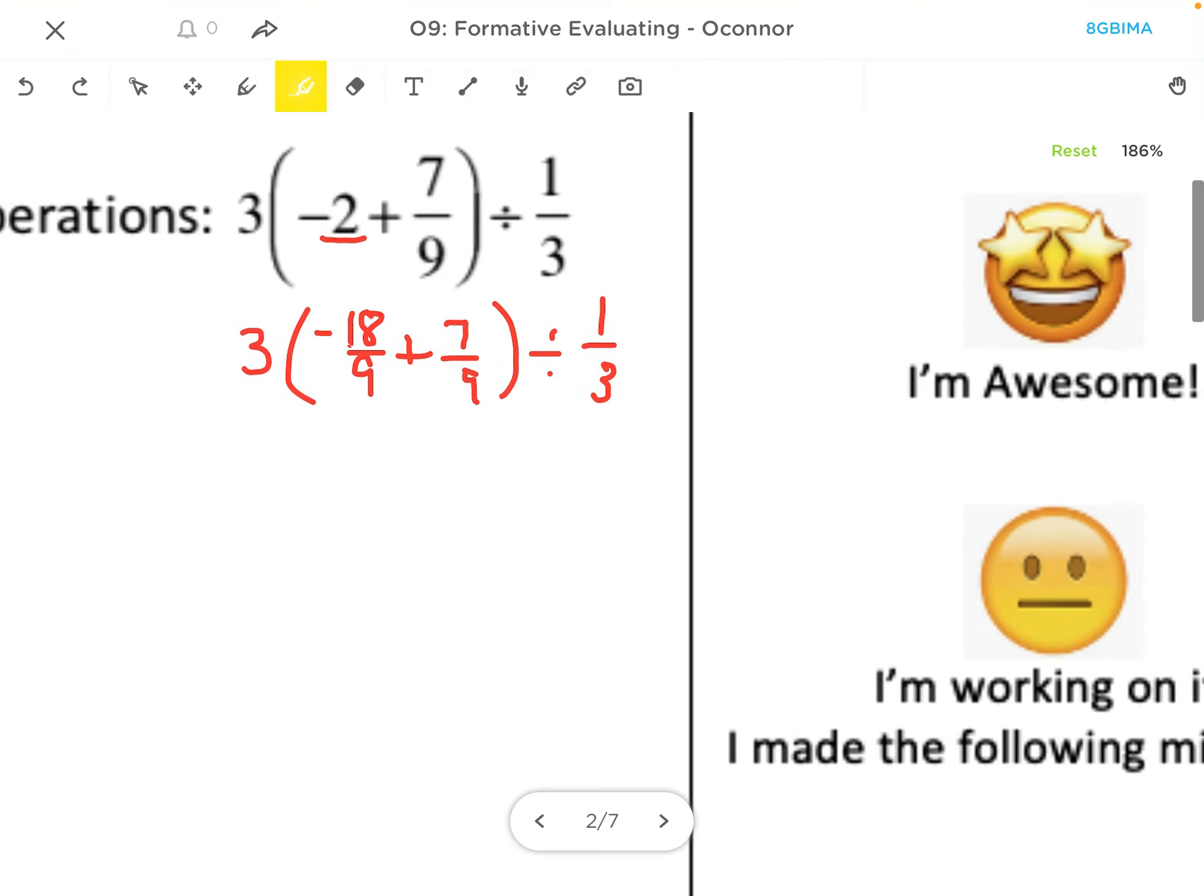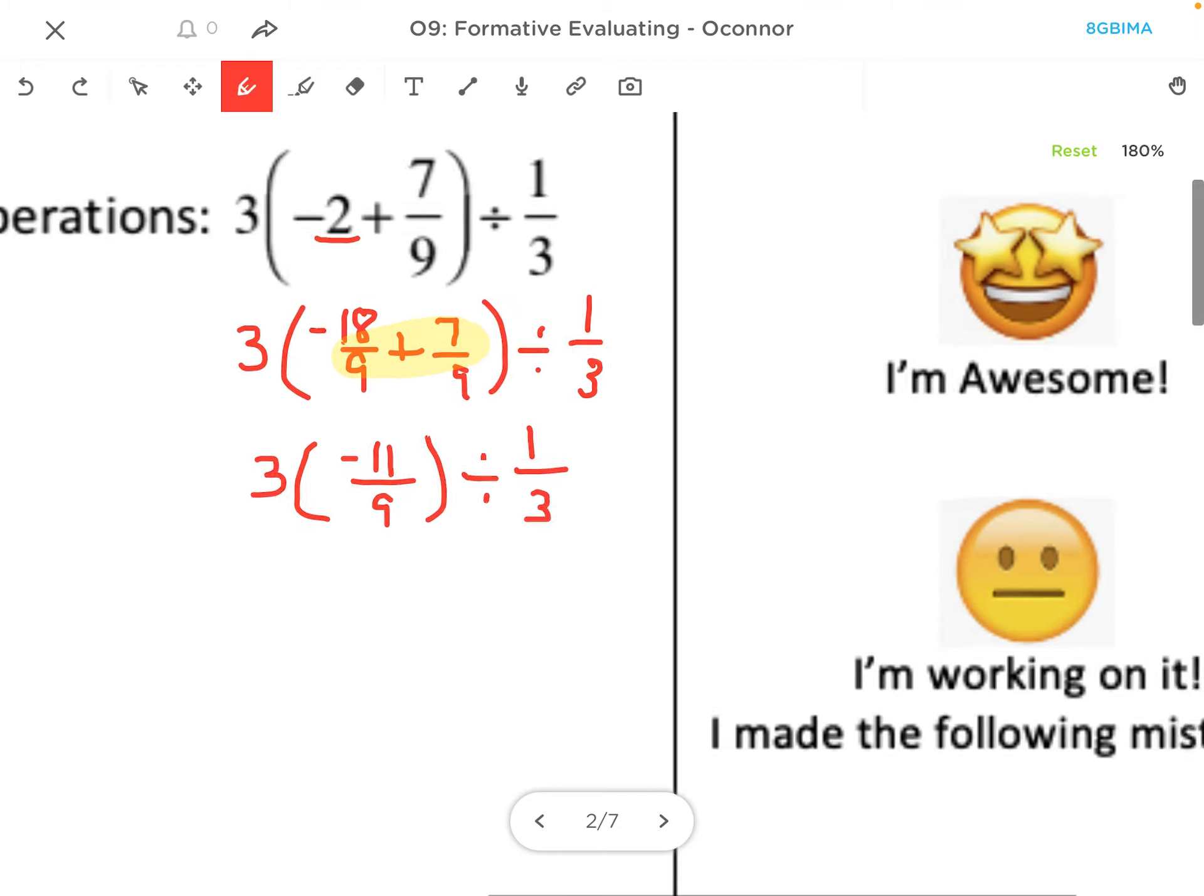Now, staying with the parentheses part, I'm going to do negative 18 plus 7 is negative 11 over 9, and then I just rewrote the rest of everything else.